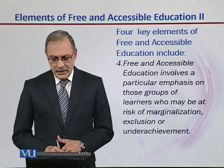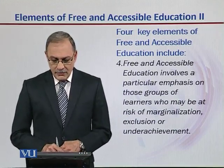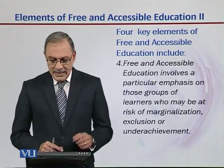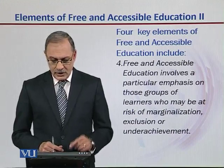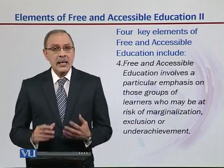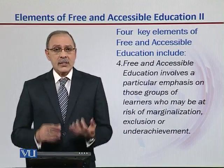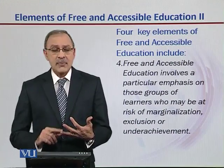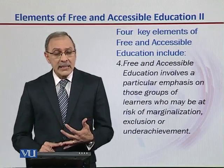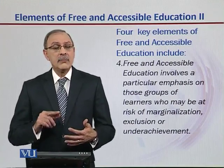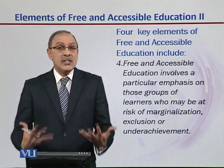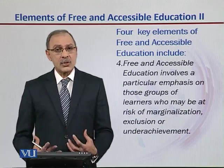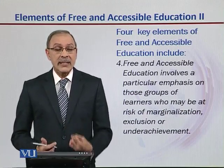The fourth element is free and accessible education involves a particular emphasis on those groups of learners who may be at risk of marginalization, exclusion, or underachievement. These could be our female students, children from below the poverty line family groups, or children with learning disabilities whose teachers don't know what to do with them. These are the marginalized children and students that we should be worried about.